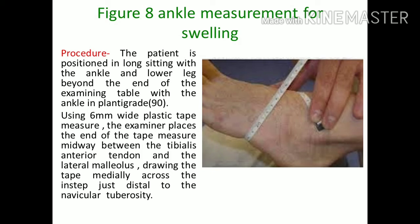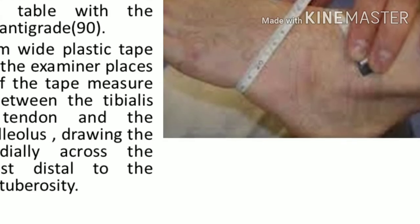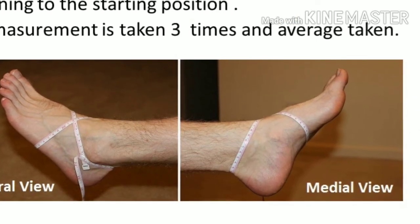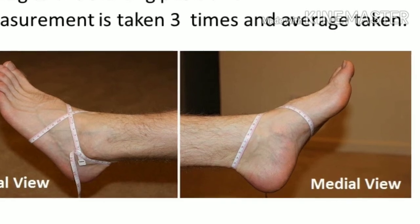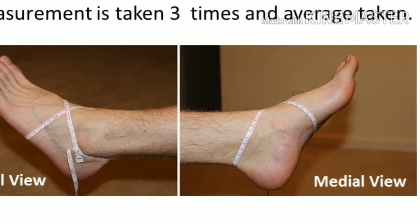After testing ligaments and tendons, we assess swelling using the Figure-of-Eight Ankle Measurement. A 6mm tape is started from just in front of the lateral malleolus — between the lateral malleolus and tibialis anterior — moved medially, crossing the navicular, going behind the sole, coming to the fifth metatarsal head, crossing over to the medial malleolus, going behind the heel, and returning to the start. This is measured three times and compared to the contralateral side. If both feet are affected, cryotherapy is applied and the measurement is rechecked to monitor reduction in swelling.